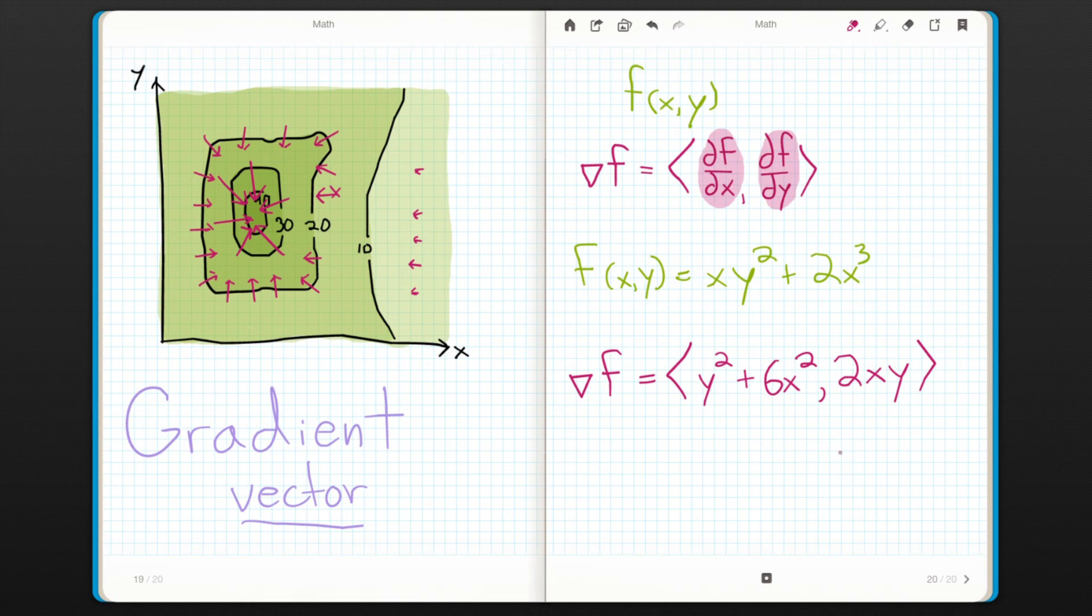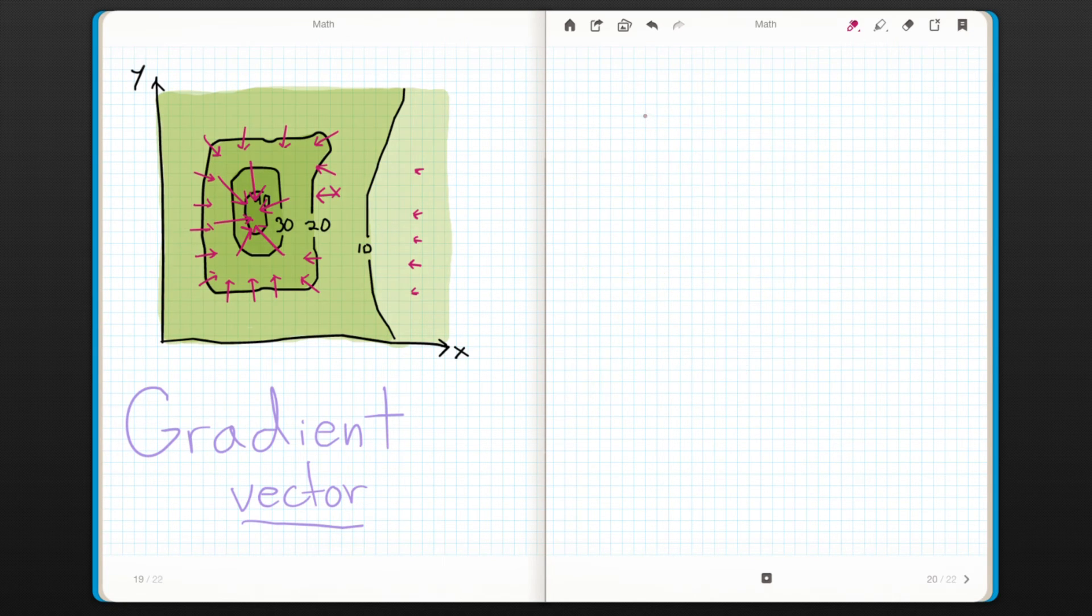The gradient vector is handy because once we have it, we can use it to find the derivative of the function in any direction. All we have to do is take the dot product of the gradient with a unit vector in the direction we want.